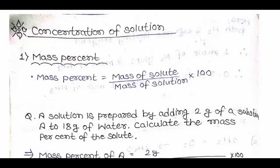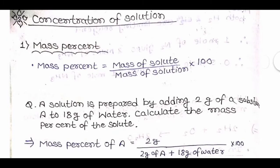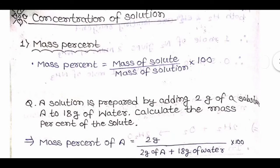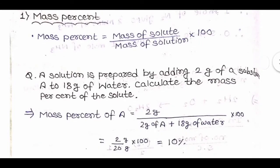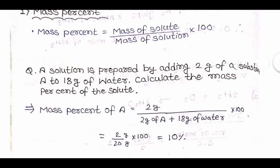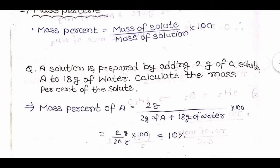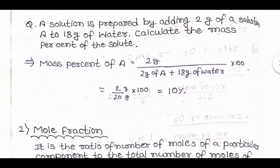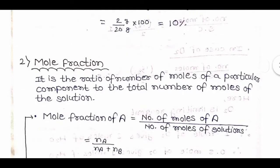Let us start with the concentration of solution, or concentration terms. The mass percent formula is: mass of solute divided by mass of solution, multiplied by 100. A question: a solution is prepared by adding 2 grams of substance A to 18 grams of water. Calculate the mass percent of the solute. Applying the formula: mass percent = 2g / (2g + 18g) × 100 = 2/20 × 100 = 10%.